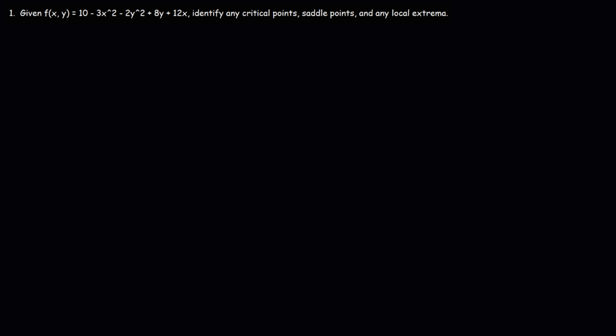In this video, we're going to talk about how to identify critical points, saddle points, and any local extreme values in a multivariable function, such as f of x, y. So let's go over the steps that we need to take. The first thing is we want to identify any points of interest — this could be a critical point or a saddle point — and that point of interest can be found when the first partial derivative with respect to x is equal to 0 and the partial derivative with respect to y is equal to 0.